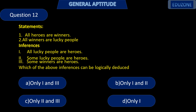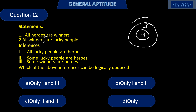It is given that all heroes are winners — so heroes are a subset of winners. And all winners are lucky people — so all winners come under lucky people.